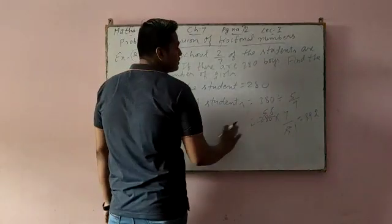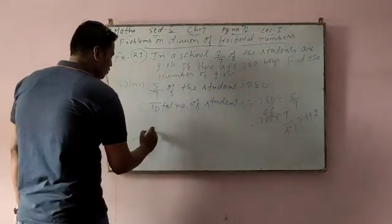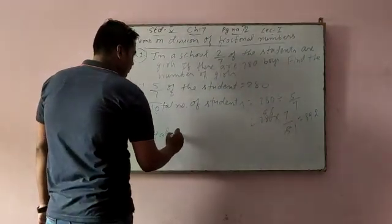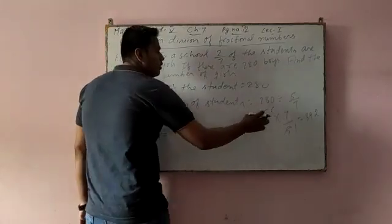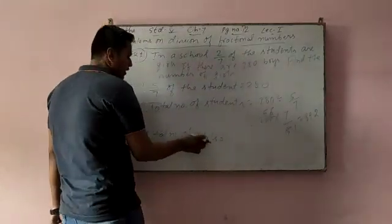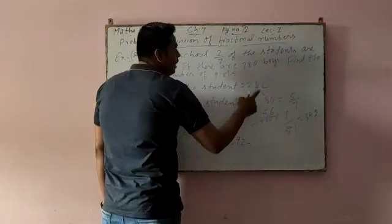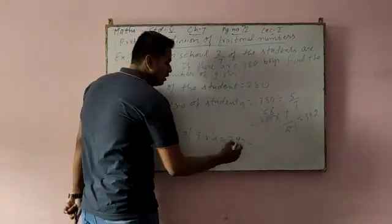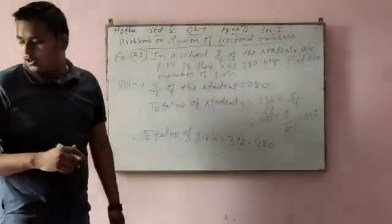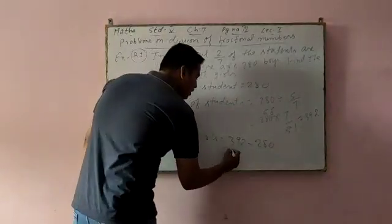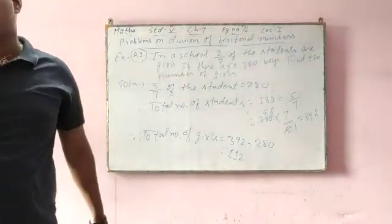Total number of students is 392. But we have to find the number of girls. Therefore, total number of girls, for finding total number of girls, you need to subtract 392 minus 280. So when you will subtract, you will get 112. Therefore, total number of girls is 112.